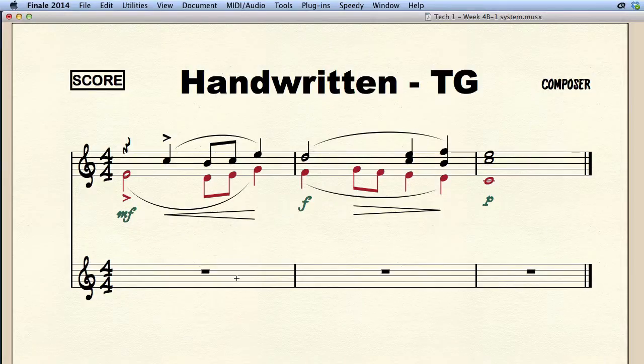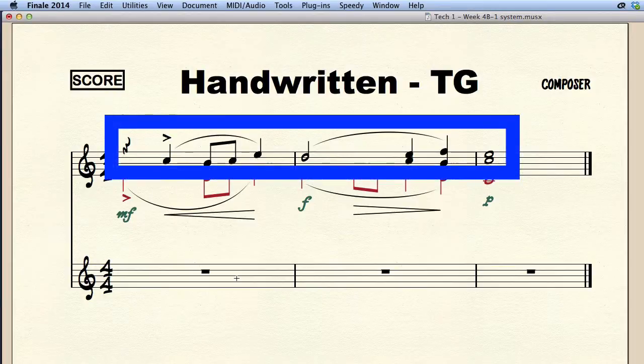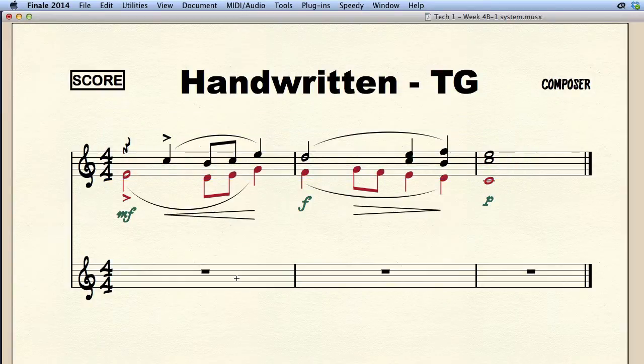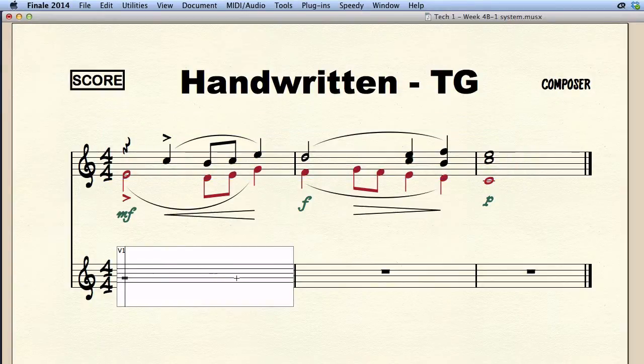The part shown here consists of two layers. The black notes with the stems going up belong to layer 1. When we click the first bar with the speedy entry tool layer 1 is selected as the default layer. Let's enter the music.